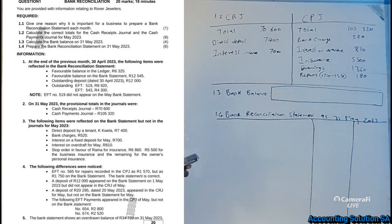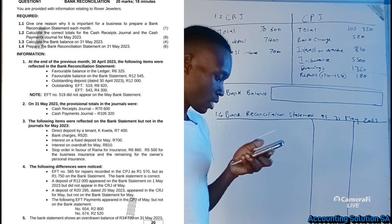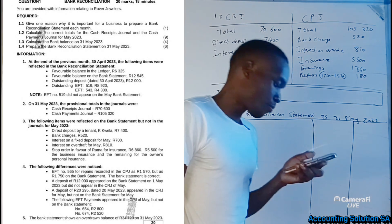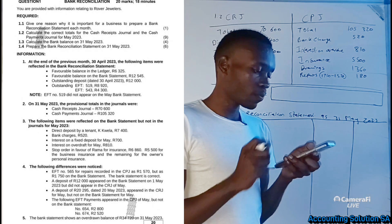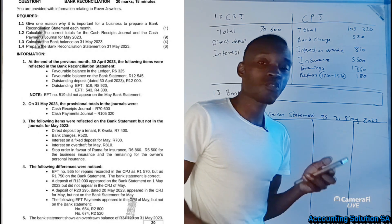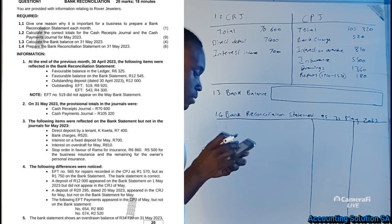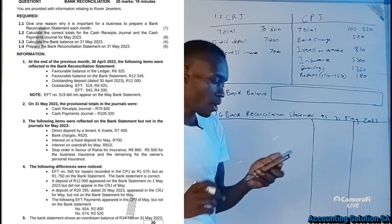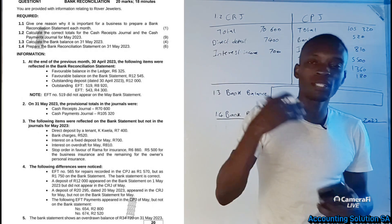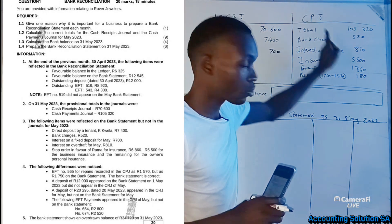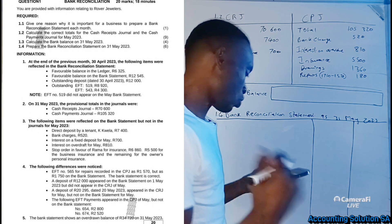Another transaction: a deposit of R12,000 appears on the bank statement on 1 May 2023 but does not appear in the cash receipts journal of May. If you check our previous statement, we already had R12,000 as an outstanding deposit dated 30 April. So we are not going to adjust anything here, because this transaction already appeared on the previous bank reconciliation statement dated 30 April 2023. We do not want a duplication.